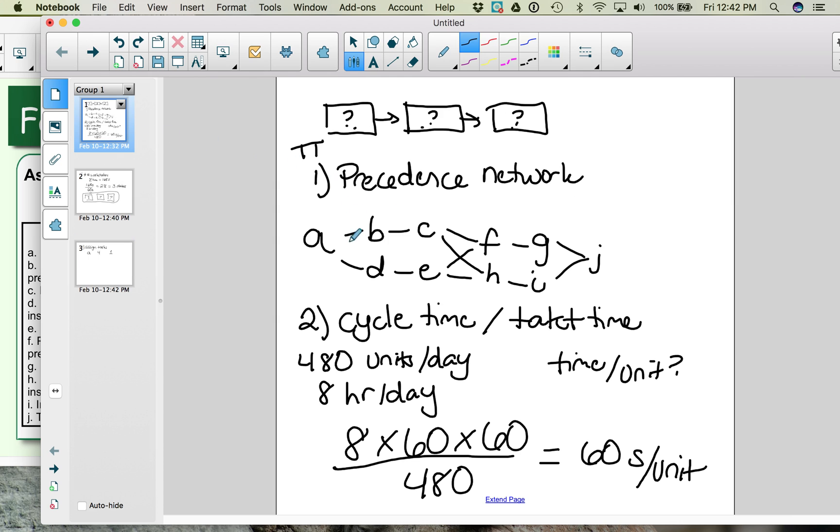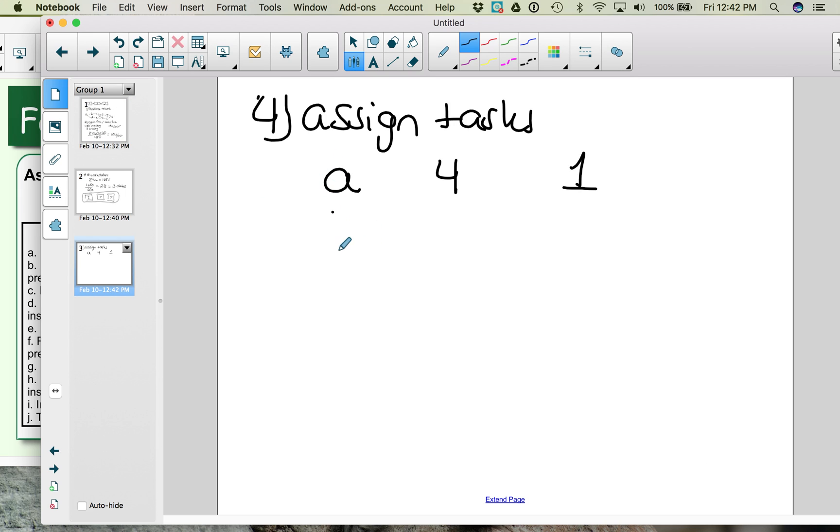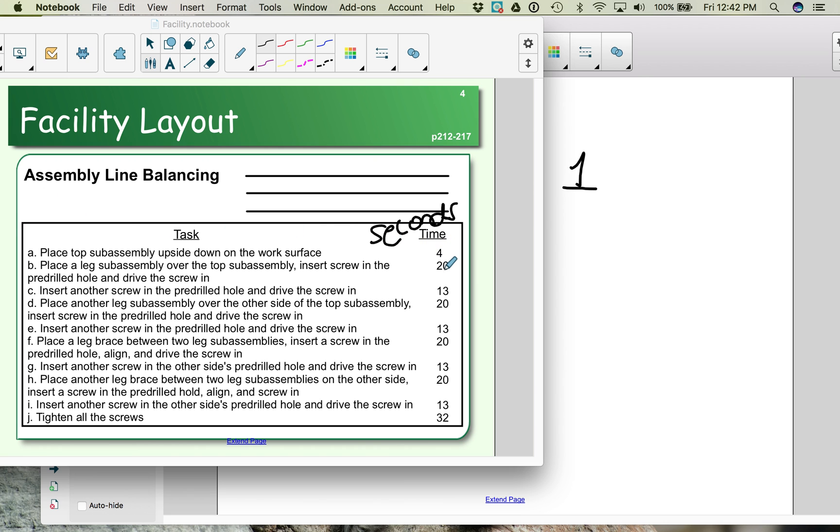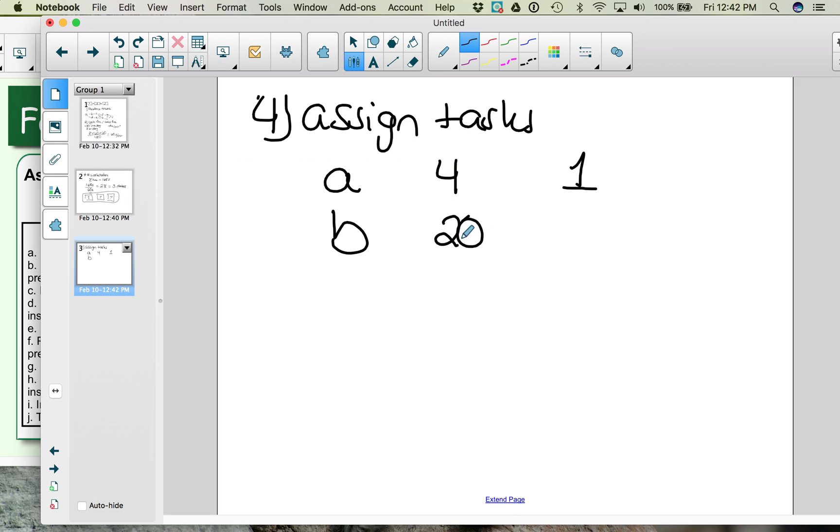Next, we're following the precedence network. So we're looking at which of these activities has the most number of followers. A had the most number of followers, so we started with it. And now we have B and D, which both have the same number of activities that go after it. So it doesn't matter whether you choose B or D. And we can just go with B here. So we'll choose activity B, and activity B takes 20 seconds. So we've now used 24 of the 60 seconds at workstation 1, which means we still have time for additional tasks.